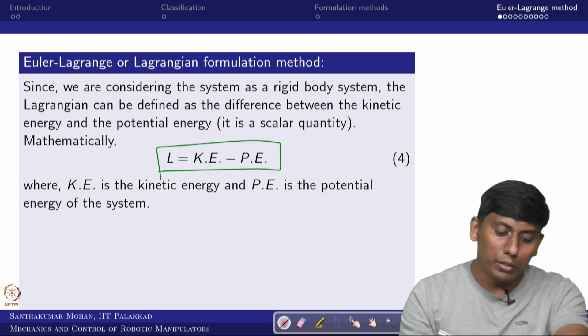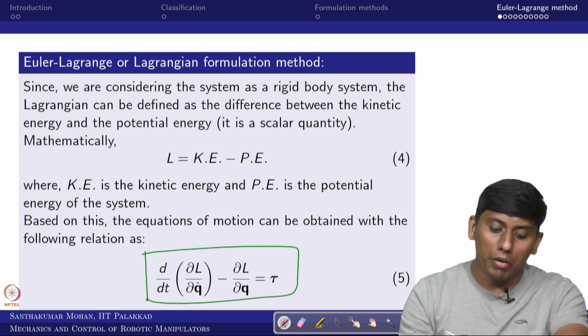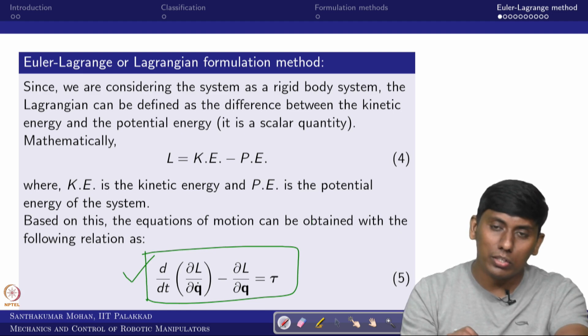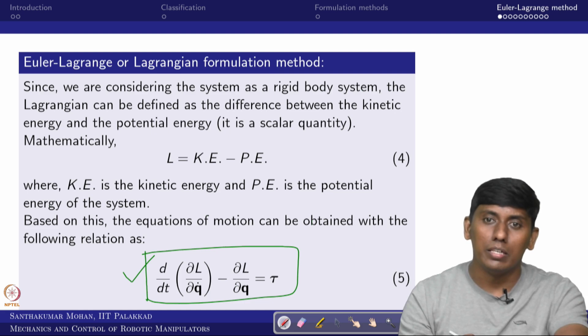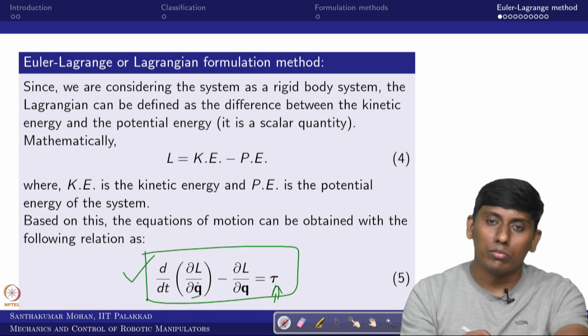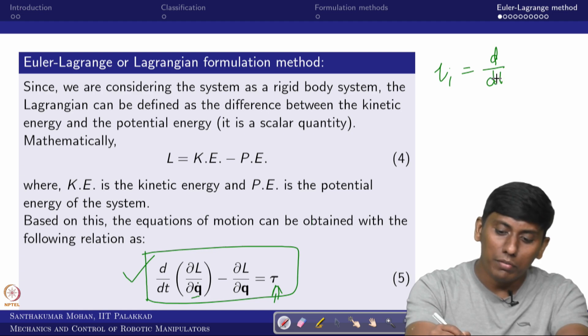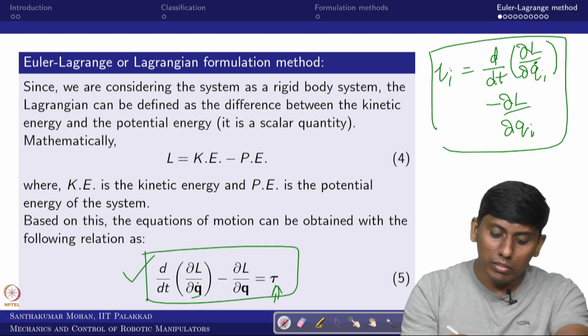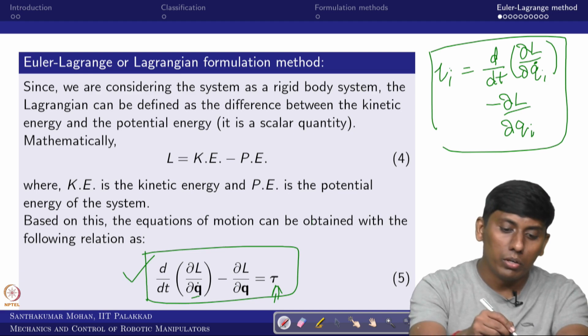From this energy difference, the equation of motion comes in a simplified manner. The Lagrangian equation is: tau_i = d/dt(∂L/∂q̇_i) − ∂L/∂q_i. Kinetic energy has two parts: translational kinetic energy due to mass, and rotational kinetic energy due to the moment of inertia. The translational term is (1/2)m·v^T·v in vector form, and the rotational term is (1/2)ω^T·I·ω, where I is the inertia tensor.